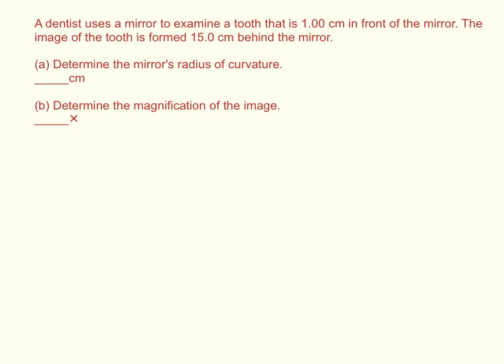So first of all we got to figure out what's given to us. It says it's placed one centimeter in front of the mirror, the tooth is. So P is equal to one centimeter. And Q, the tooth image is formed 15 centimeters behind the mirror, so negative 15 centimeters.